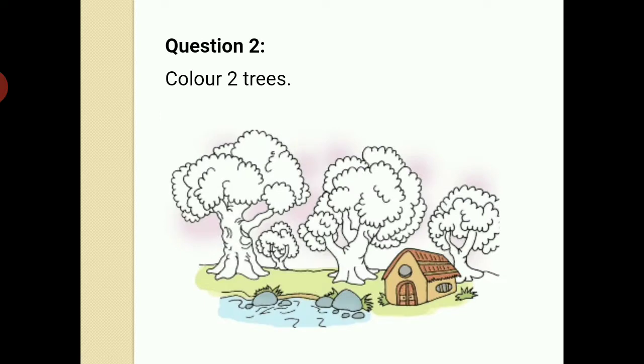Next, color 2 trees. Here, 1, 2, 3, 4. This second one is very small. But there are altogether 4 trees. Out of these 4 trees, you have to color any 2. Whichever you like. You can color any 2 of the trees.